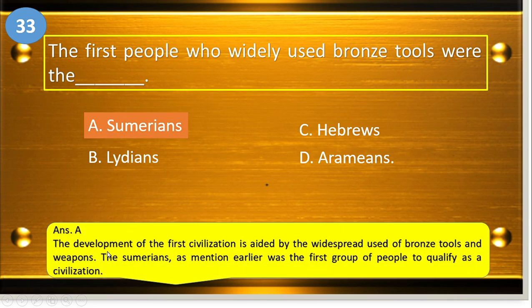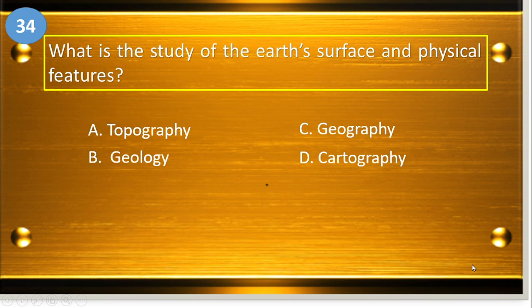The development of the first civilization is aided by the widespread use of bronze tools and weapons. The Sumerians were the first group of people to qualify as a civilization.